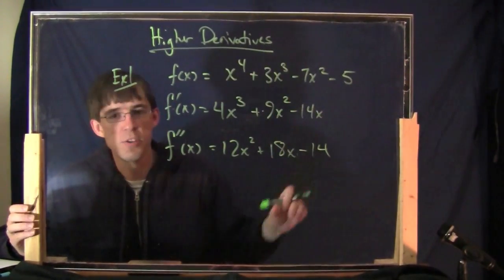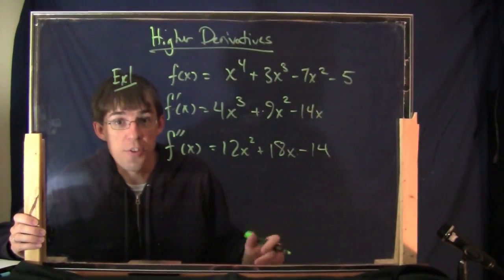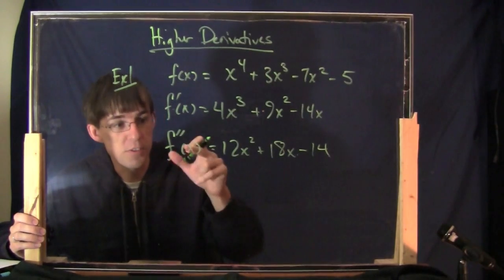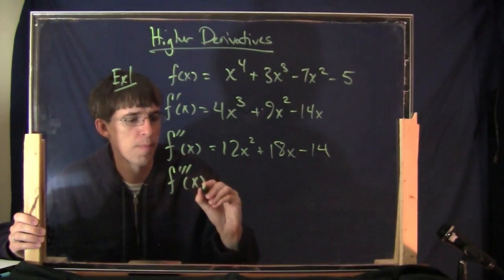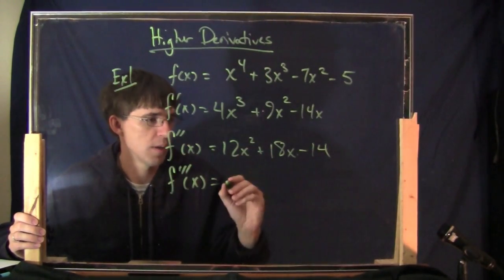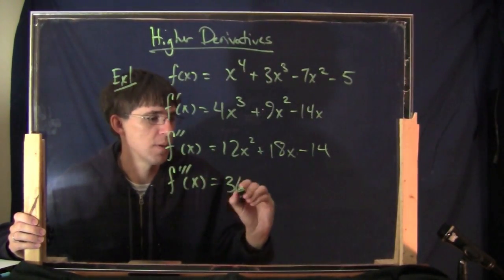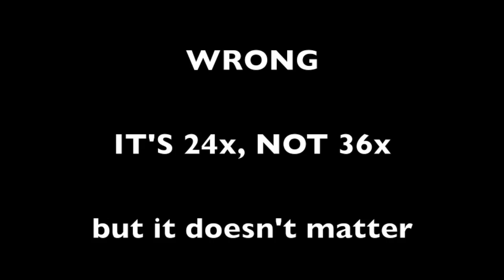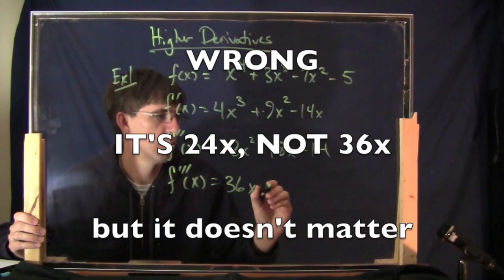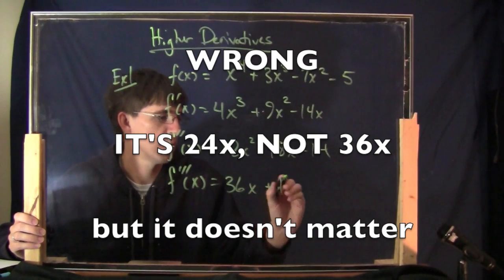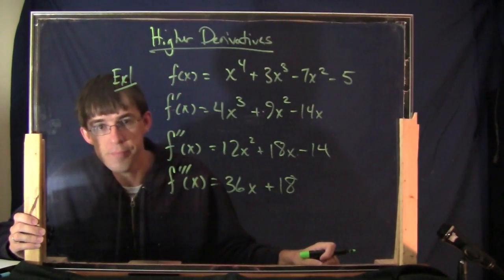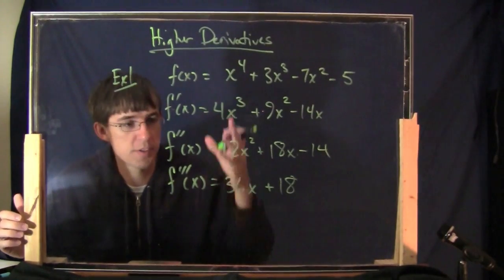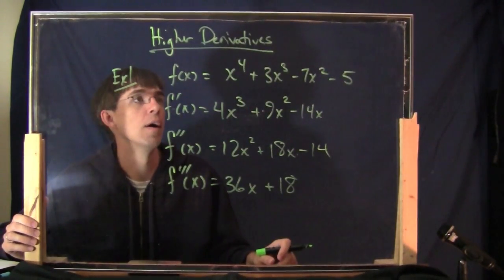That's what the higher derivatives are. What's the third derivative? You take the derivative again. What's it going to be? 36x plus 18. This is how you do the higher derivative.